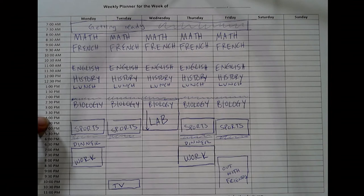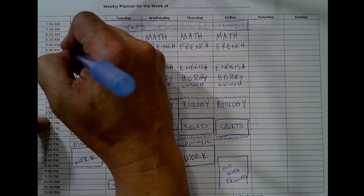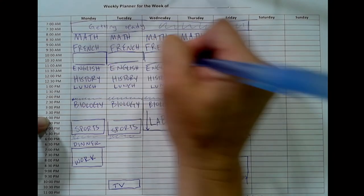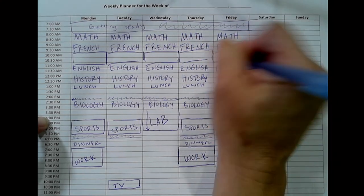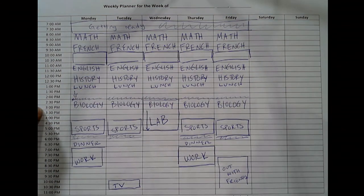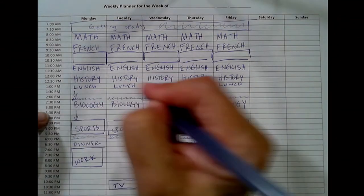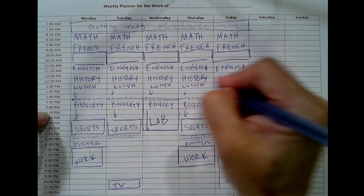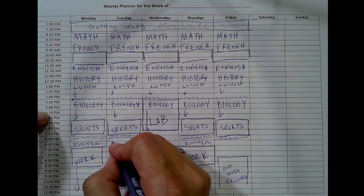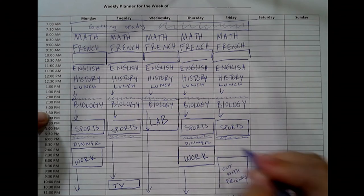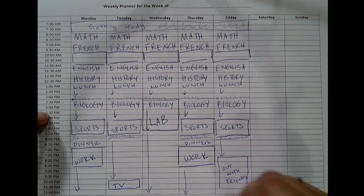Once you've done that, you can start to see where the blocks of time that are actually available are. In this sample schedule, there's a block of time every day Monday through Friday between French class and English class. There's also a little time between lunch and biology, and about an hour between the end of biology and sports practice. There's also time after work on Monday, after sports practice on Tuesday, after bio lab on Wednesday, after work on Thursday, and between sports practice and going out with friends on Friday night.